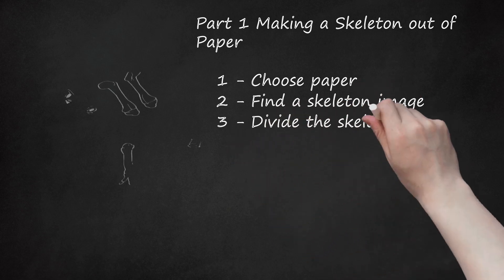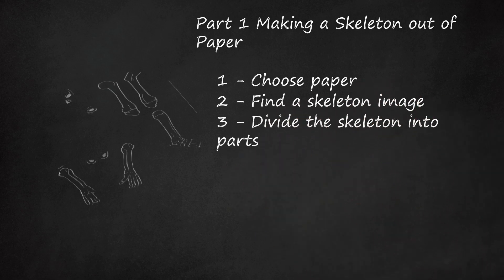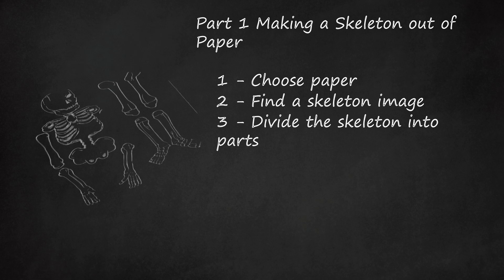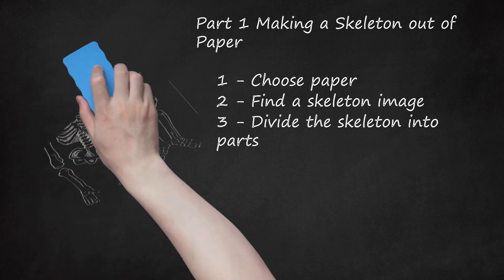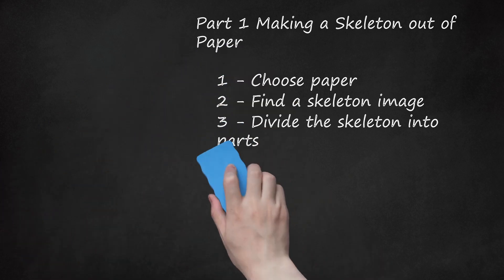Step 3: Divide the Skeleton into Parts. Separate out the parts of the skeleton that will make up your paper skeleton. Each part will be made out of one piece of paper, cardstock, or paper plate: skull, head, rib cage, pelvis, two upper arm bones, two lower arm bones with hands, two upper leg bones, two lower leg bones with feet.